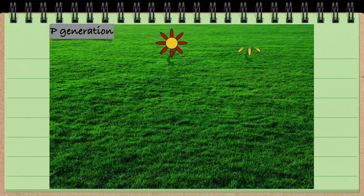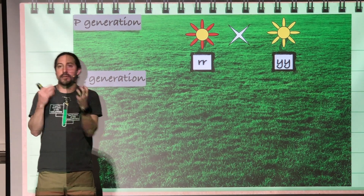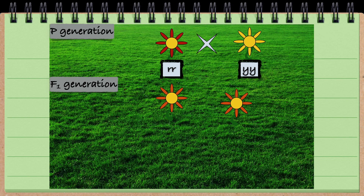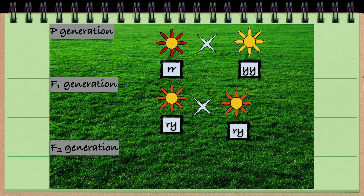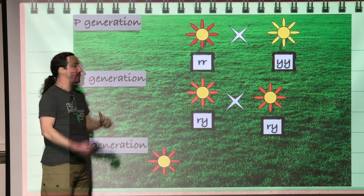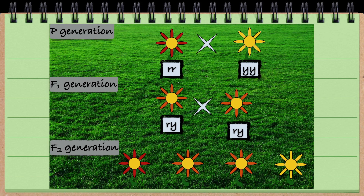Now with a red flower and a yellow flower, if we cross those homozygous individuals, we'd know exactly what the F1 generation would be: orange flowers, the heterozygous. And if we were to take our orange flowers and cross them, we would end up with our F2 generation where 25% would appear red, 50% would appear orange, and 25% would appear yellow.